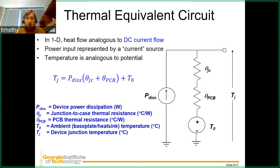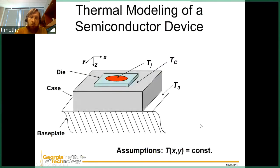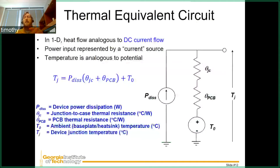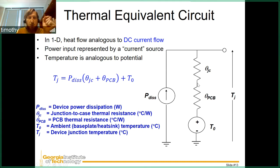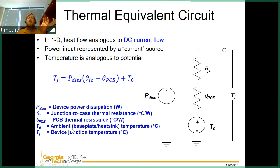Here's how we can look at this as an electrical equation. T-naught — the base plate temperature — acts as a voltage supply. We have two thermal resistances: the case-junction thermal resistance and the PCB thermal rating. Power dissipation is treated as a current drive. We combine these in an equation to calculate T-J, the device junction temperature, which is our primary concern in determining how the device will dissipate power.